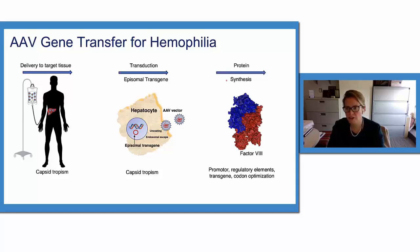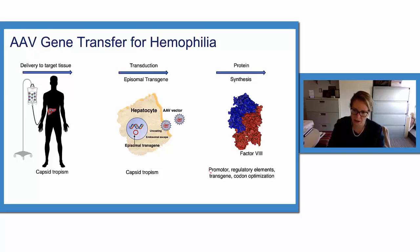The natural synthesis of the protein of interest — in our case either factor 8 or factor 9 — is dependent on promoter and regulatory elements that are present within the expression cassette.